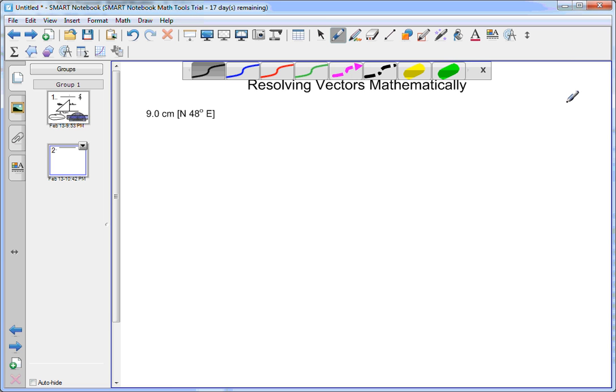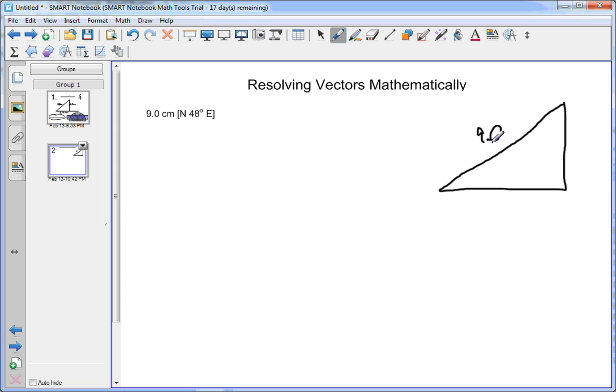If we just sketch out this question, we know that this is 9.0 centimeters. We also know that this angle here is 48 degrees. And from our understanding of opposite and adjacent angles, we can also determine that this angle, then, is 48 degrees.